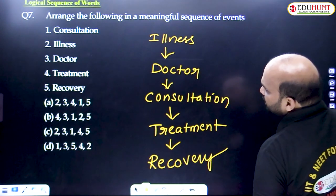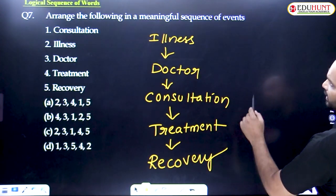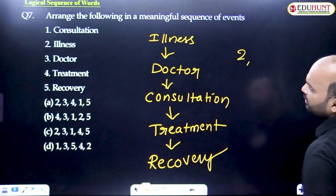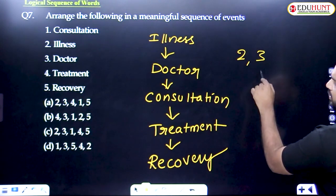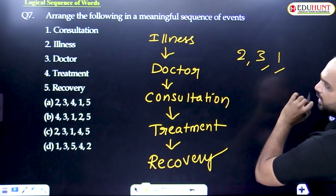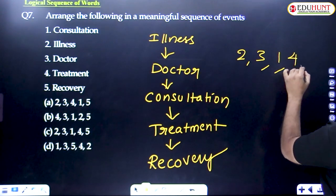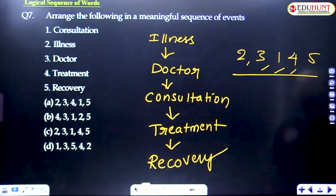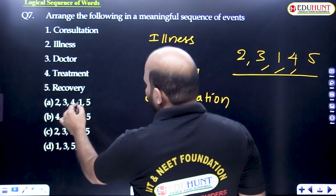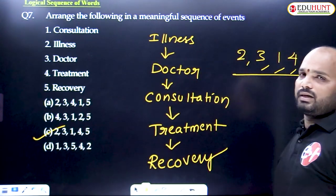So this is the logical sequence of the given order. First one illness is the second position, next one doctor third one, next one consultancy first one, next one treatment fourth one, and recovery fifth one. Two, three, one, four, five — option B is the required answer.